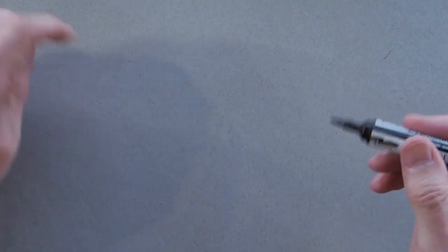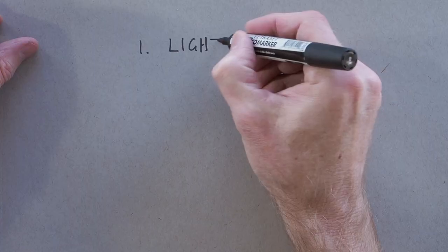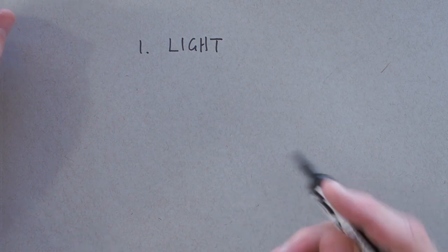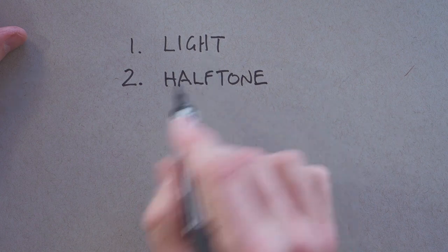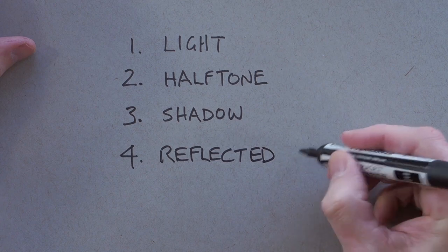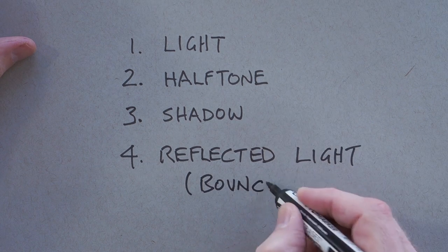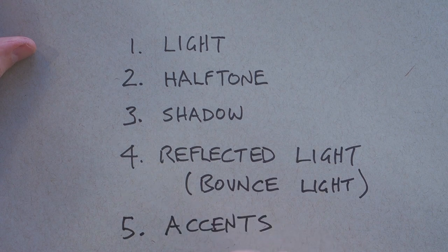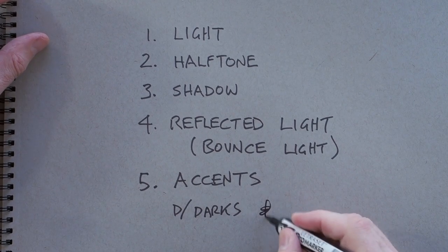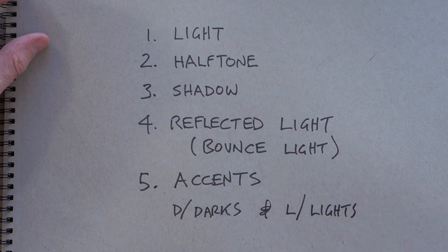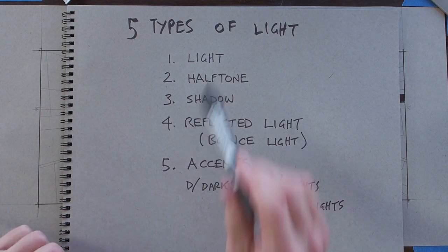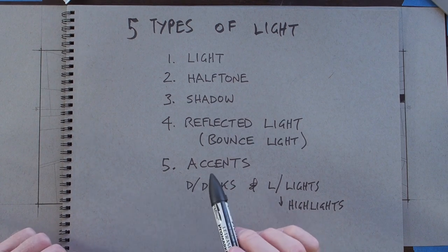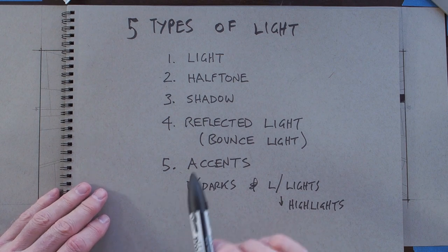Let's cover a topic called the five types of light — not the actual types of light like sunlight or overcast. What is meant by this is: one, the light side of an object; two, the halftone side of an object. Think of these as positions on a sphere as a basic beginning. Three, shadow; four, reflected light, also known as bounce light; and five, accents — your darkest darks and your lightest lights, which would be highlights. At any given moment, you should know which one of those five you're painting, whether it's digital, traditional, or even sketching with pencil.